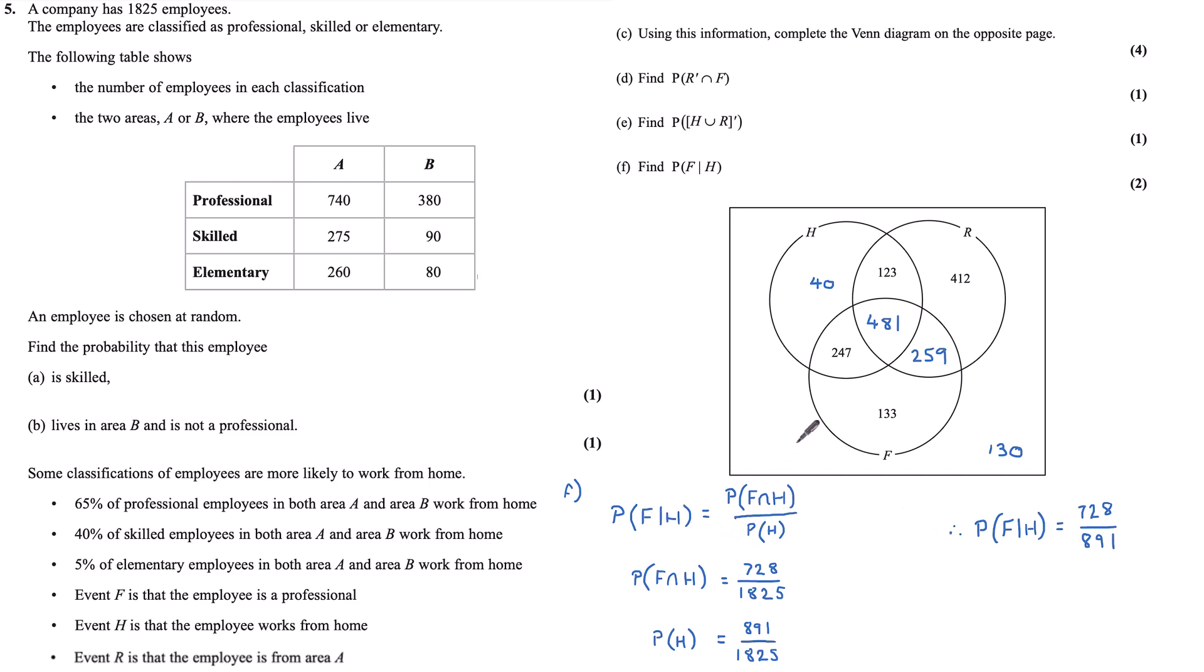While our given formula can be used in this question, since we have the Venn diagram, a simpler way to look at F given H is we have H already. I can see it's the population of this circle here, which we know to be 891. And if you are an employee that is professional and you are within H already, you are these two sections here. So we can go straight for 728 over 891 just from our Venn diagram, which is a lovely trick if we have the Venn diagram given to us.